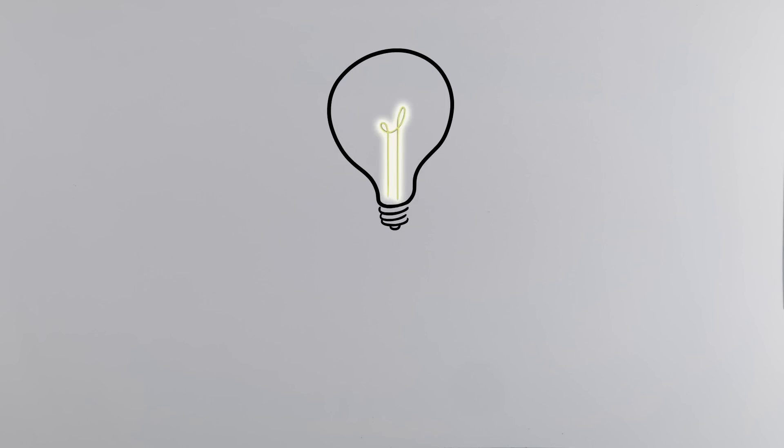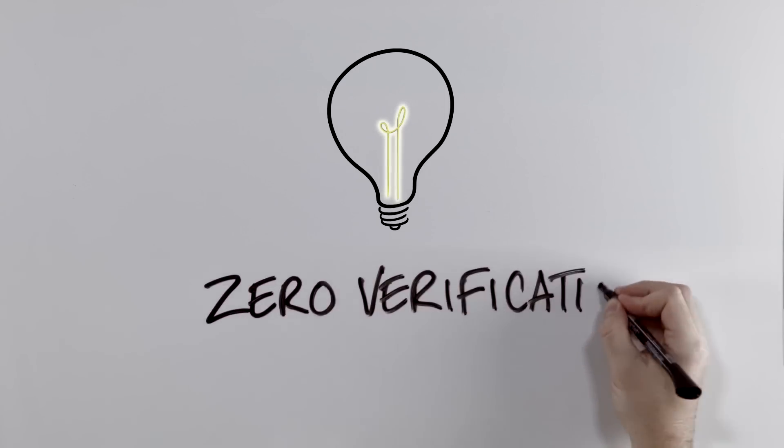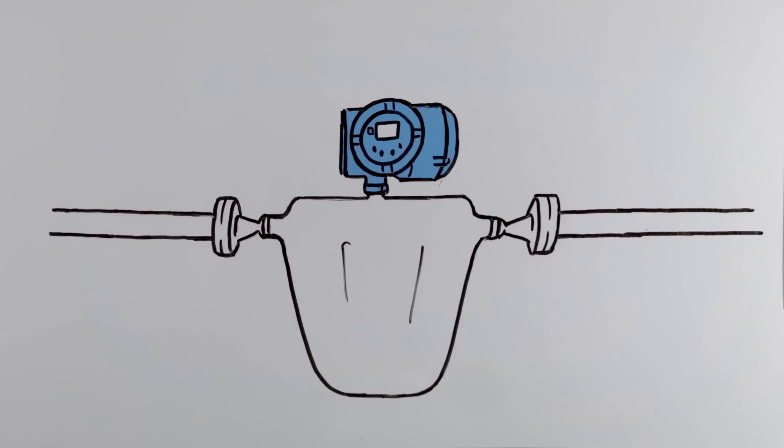Micromotion has a better way. It's called zero verification. With zero verification, Tina can run a check of her meter zero with the press of a button.